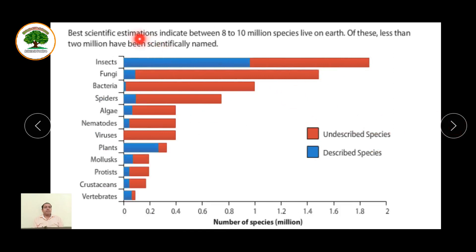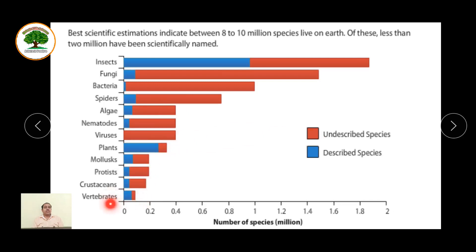The best scientific estimation indicates between 8 to 10 million species live on Earth, and of these, less than 2 million have been scientifically named. There are lots of insects still yet to be named — with no scientific name recorded. In fungi, bacteria, spiders, algae, nematodes, and viruses, many species haven't even been discovered. Plants, protists, crustaceans, and vertebrates also have lots of species yet to be discovered.